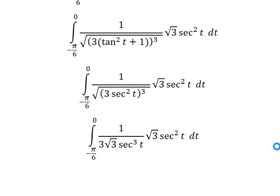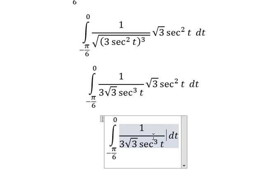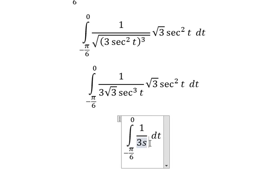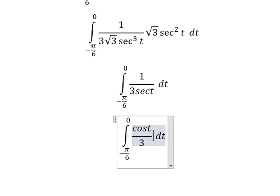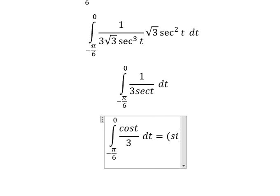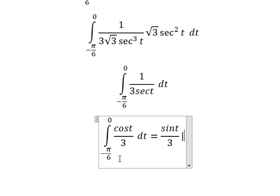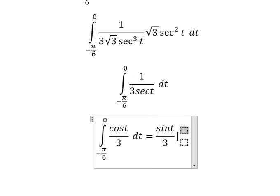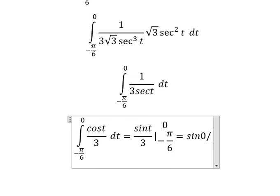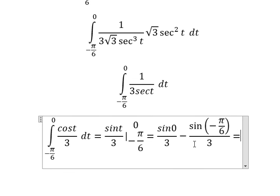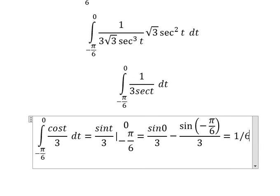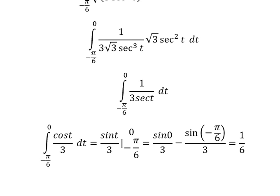Now we can simplify the √3 · sec²t term, and this gives us cosine t. The integral of cosine t is sin t. Evaluating from -π/6 to 0 and simplifying, we get 1/6. So the final answer is 1/6. That's the end — thank you for watching.